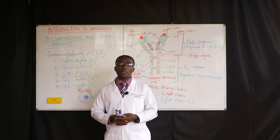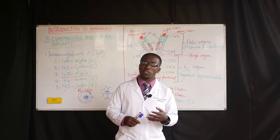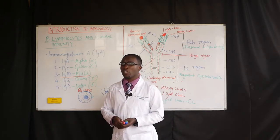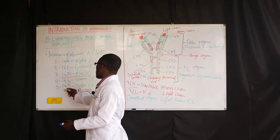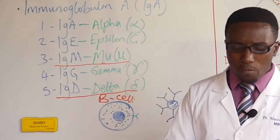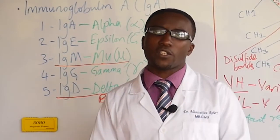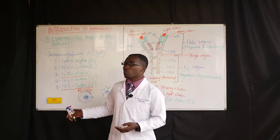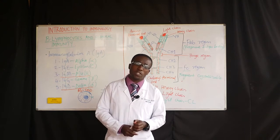Allow me to take you to another antibody, which is immunoglobulin D — IgD. IgD coexists with IgM on B-cells, where IgM is serving as a receptor for the antigen. Our immunoglobulin D accounts for less than 1% of serum immunoglobulins.